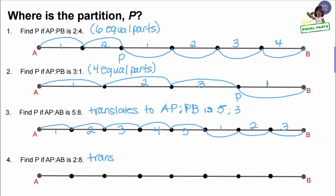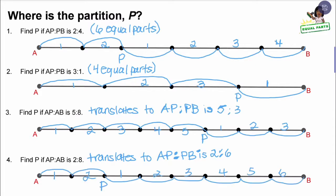Problem four says find P if AP to AB is two to eight. That means from A to P there are two parts, and from A to B is eight parts — but that's the entire line. So we want to translate it so we can actually find the partition. We're going to translate it to AP to PB is two to six. I forgot to put P for question three, so let me add that in. Now we can partition line four. From A to P we have our two parts, and from P to B we have our six parts.